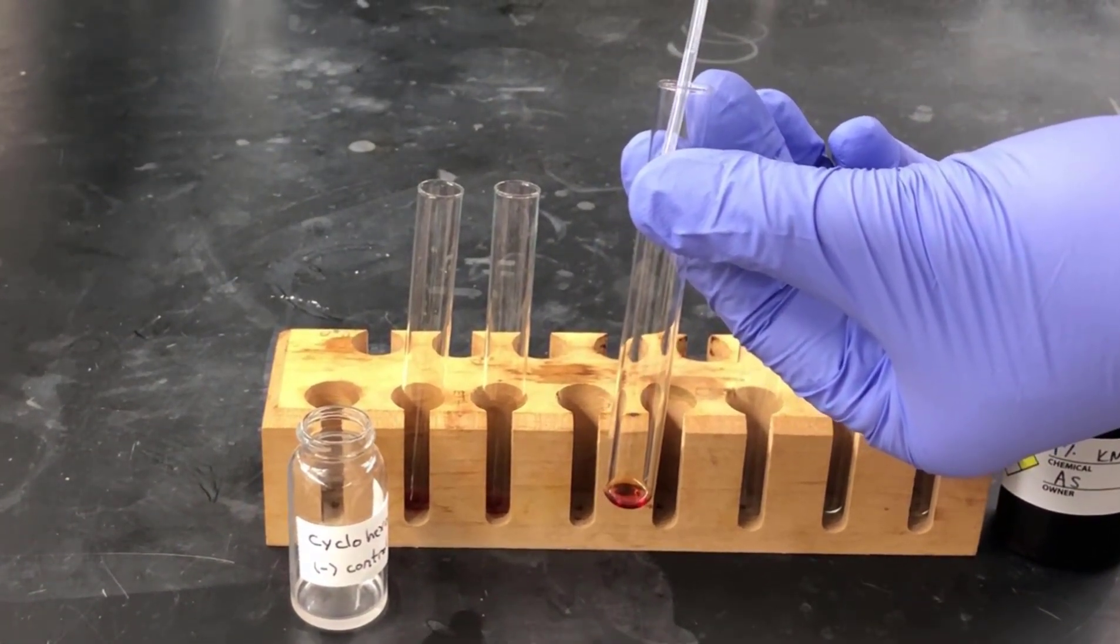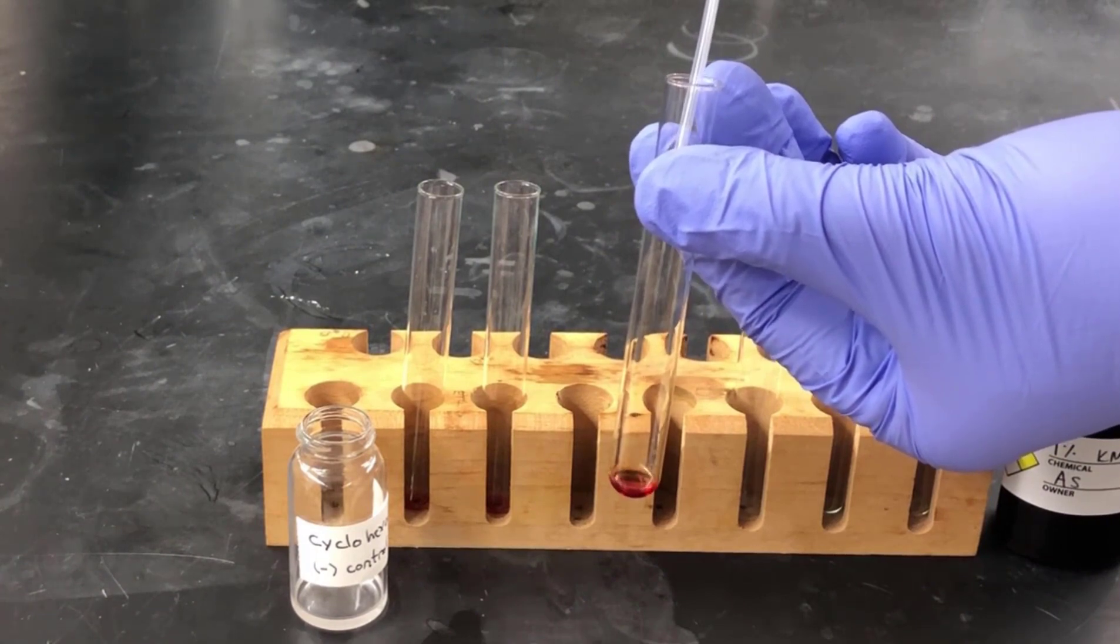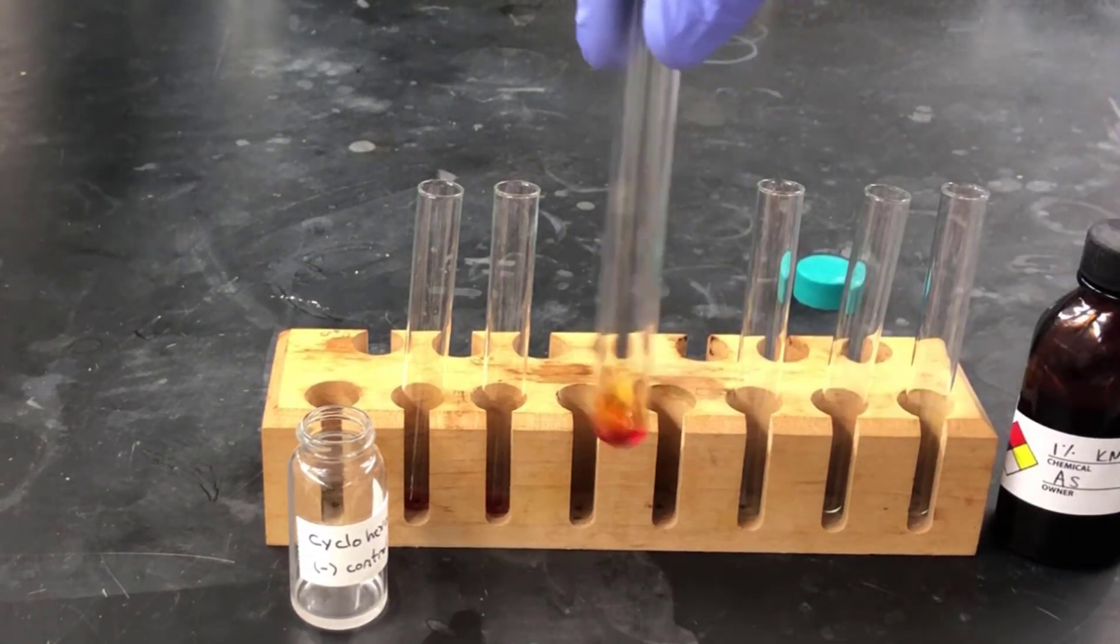We add a few drops of cyclohexane, agitate the tube, and note the result. Here, there's no color change. It remains orange.